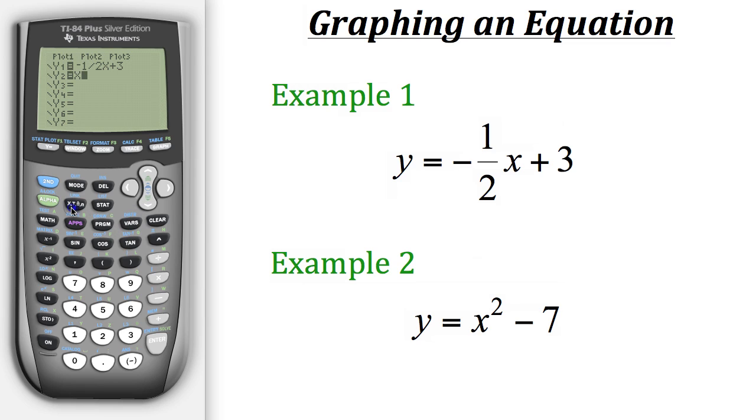So now we put in x squared minus 7. And then once we've done that we could go back to graph. Now as you can see we have both of the equations on this same coordinate plane.